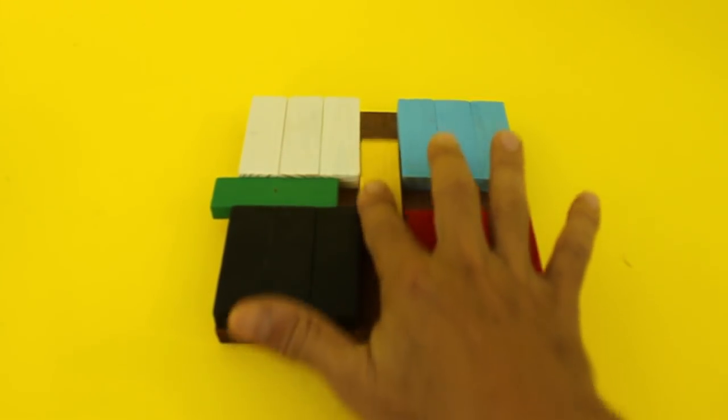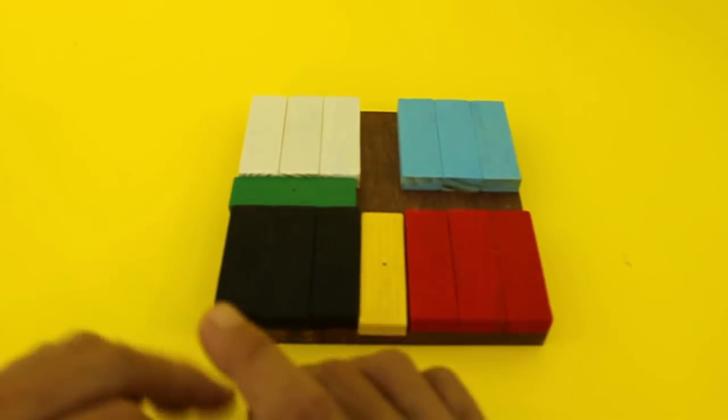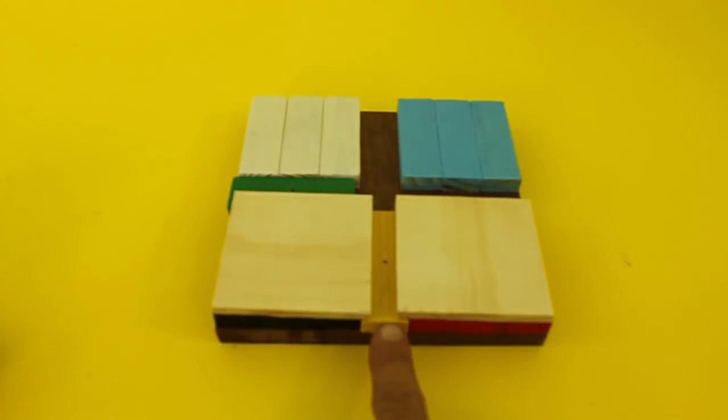The sliders are also Jenga blocks, and we need to add a third layer in this way to prevent the sliders from moving in the vertical direction.